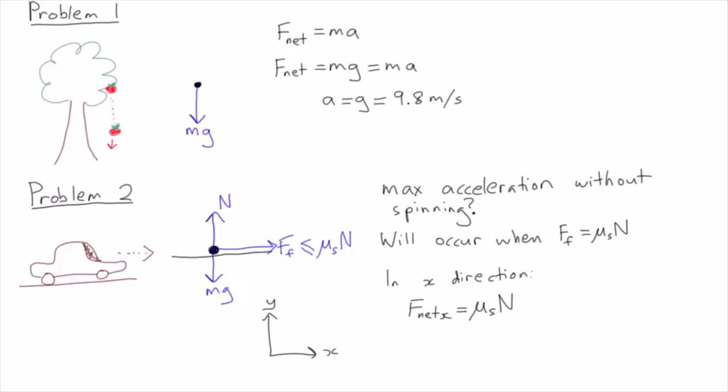In the y direction, we have the normal force pointing in the positive y direction and gravity pointing in the negative y direction. If we add these up, we get the net force in the y direction is equal to N - mg.